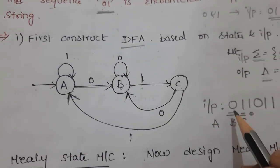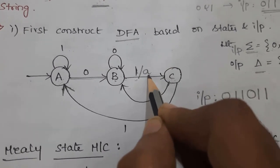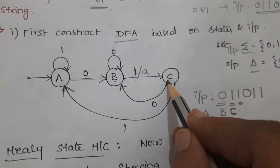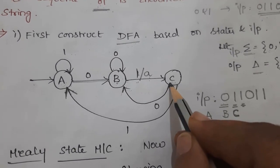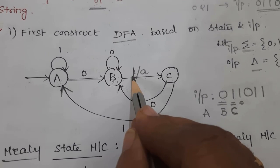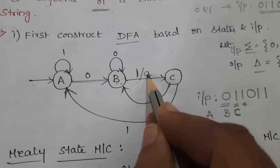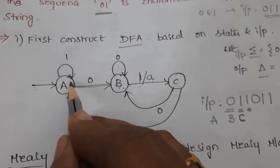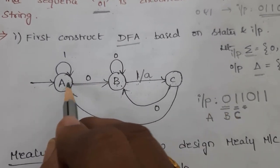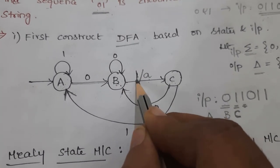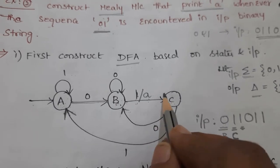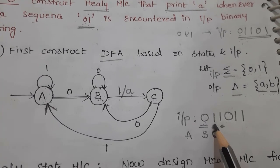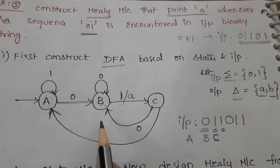Now when 01 is encountered — that is, going from B to C — we need to write the output as A. So whenever 01 comes, it prints A. Then we are at state C. If 0 comes next and then 1, again it prints A. So for any kind of binary data, whenever we get 01, it should print A.